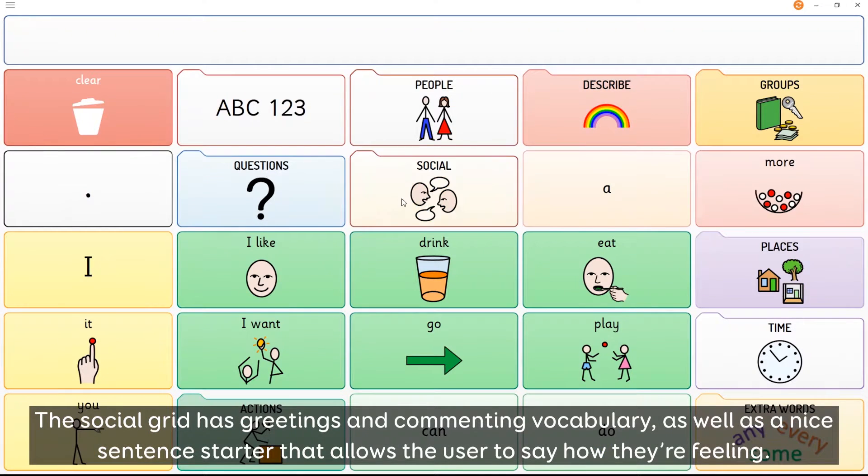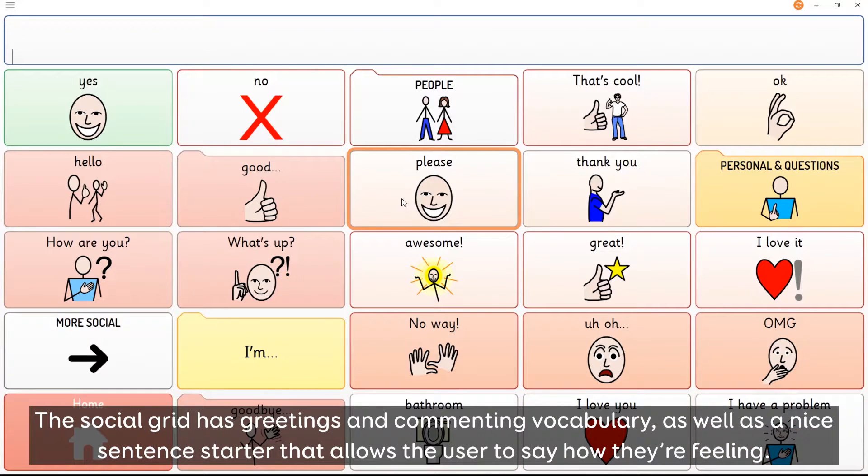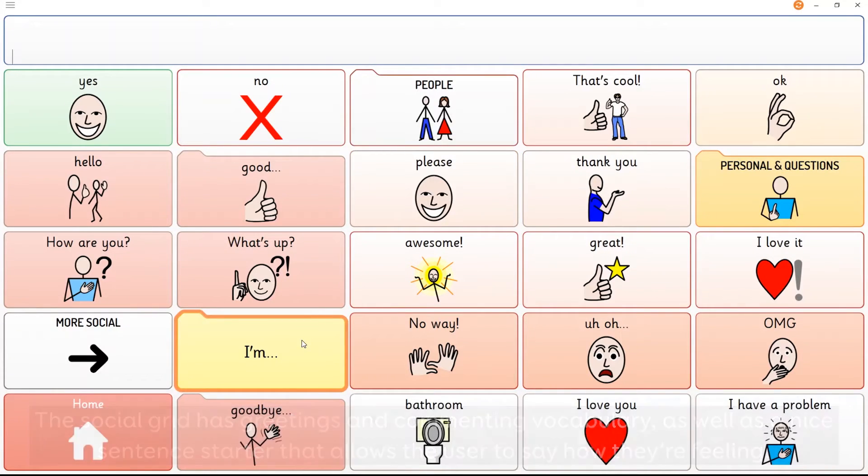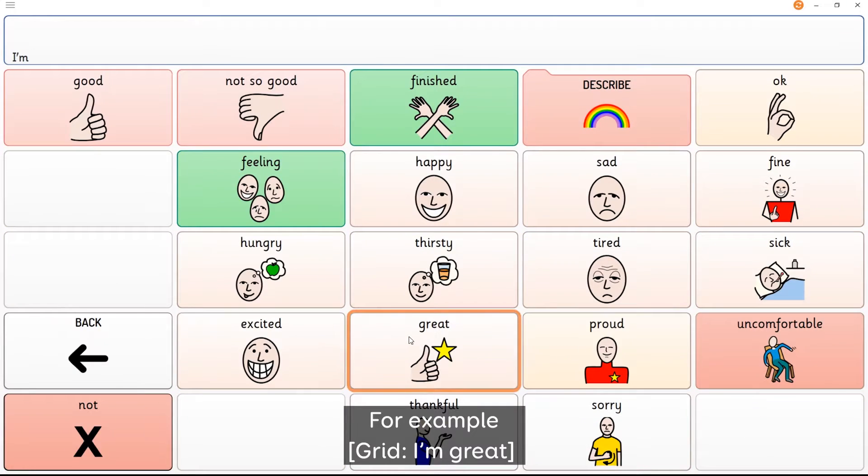The social grid has greetings and commenting vocabulary as well as a nice sentence starter that allows the user to say how they're feeling. For example, I'm great.